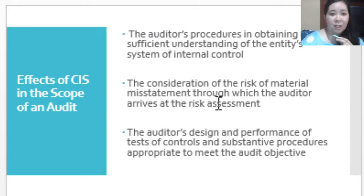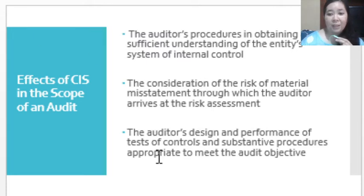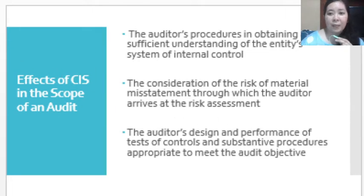Another change is on the risk of material misstatement through which the auditor arrives at the risk assessment. In this case, the auditor will base the risk assessment on the status of internal control as well as other factors considered important in the assessment of risk. Another area is the auditor's design and performance of the test of controls, as well as the substantive procedures which are appropriate to meet the audit objectives in a CIS environment. Those are the different areas where the auditor will expect some changes or differences between the manual and a computerized entity.